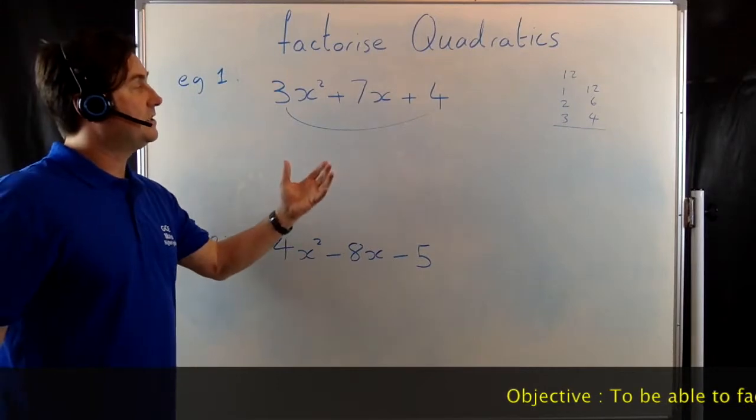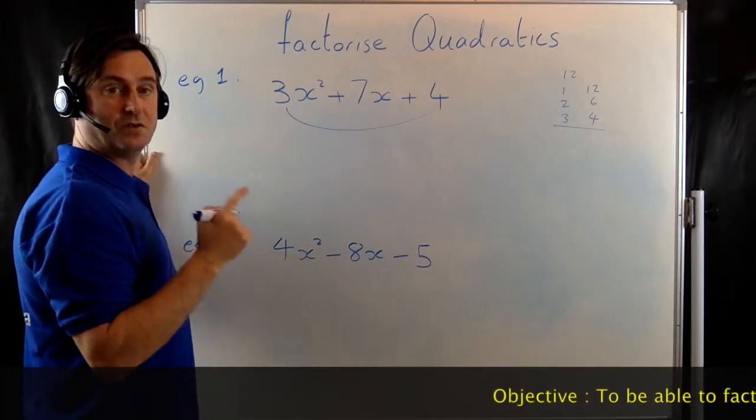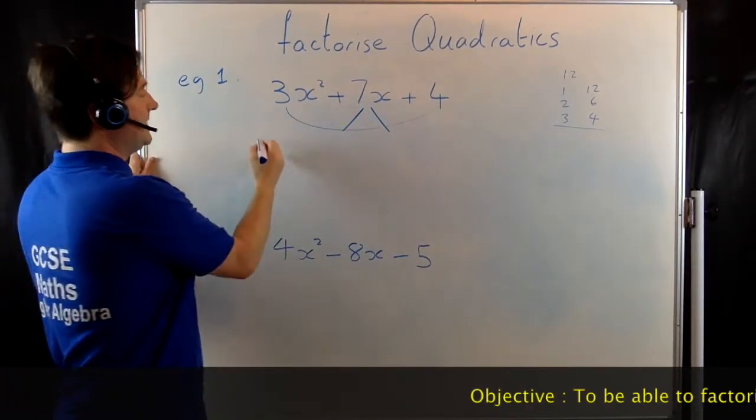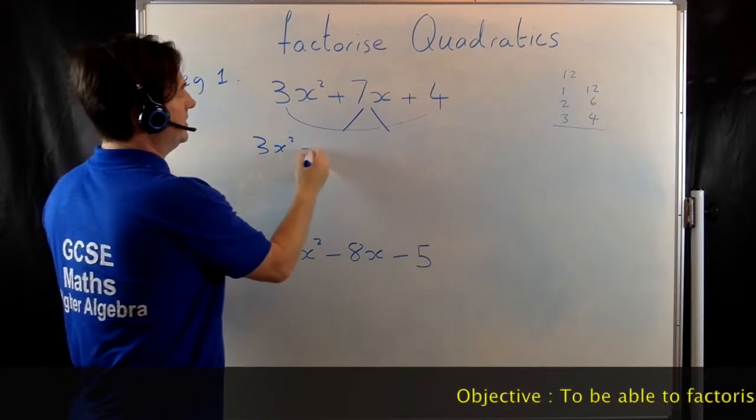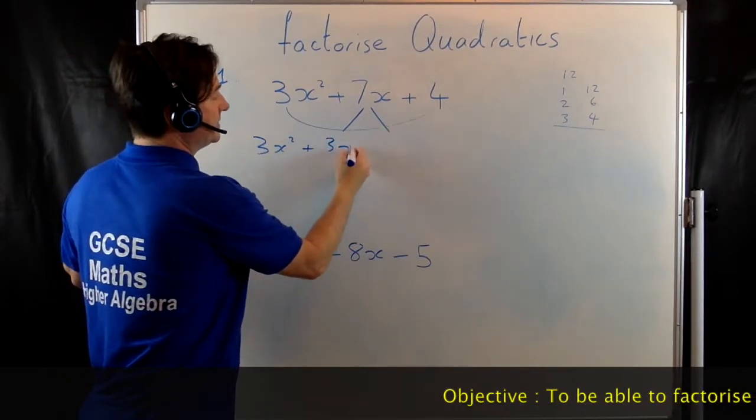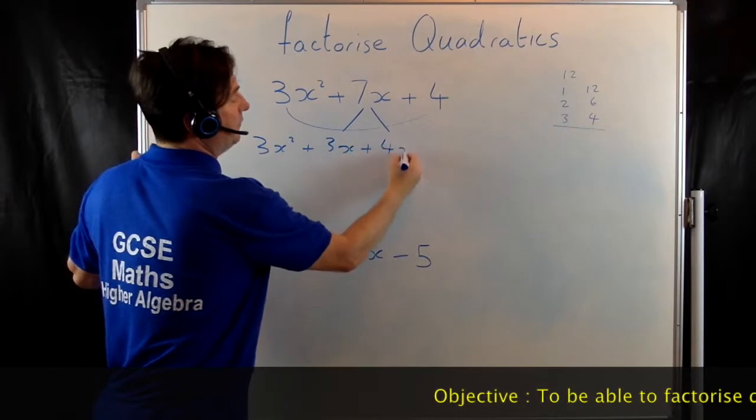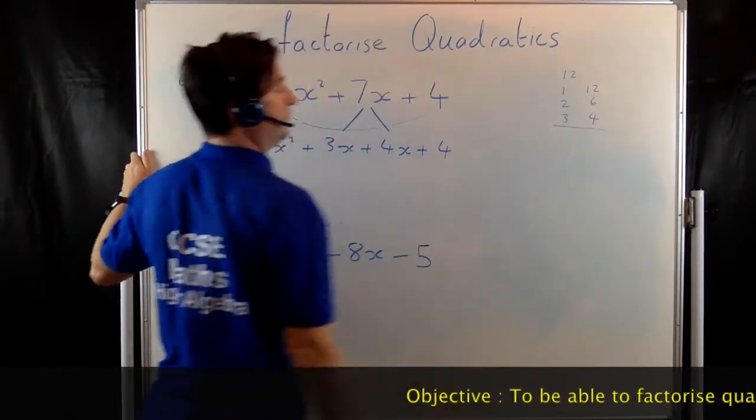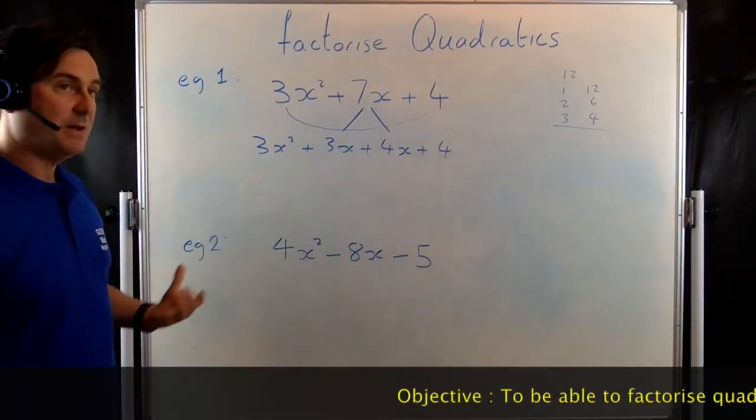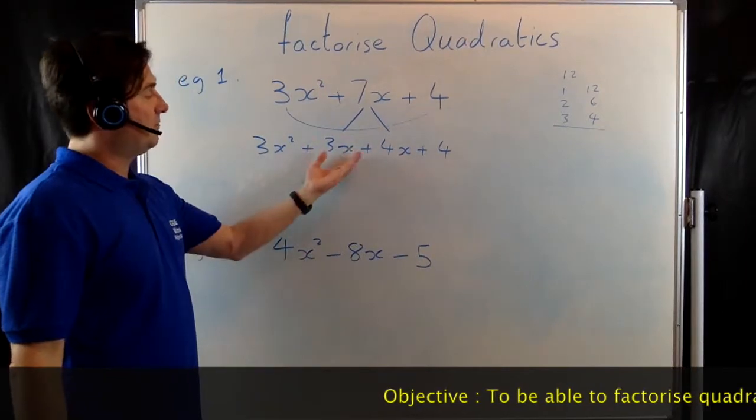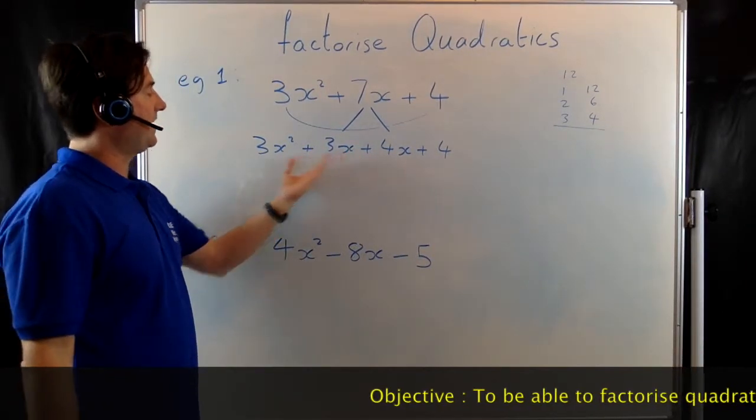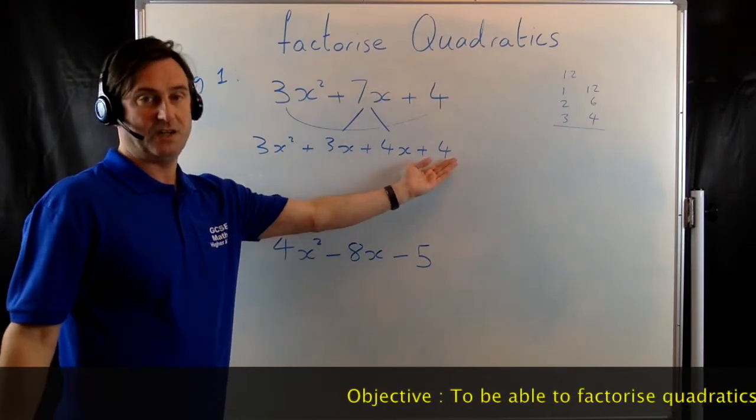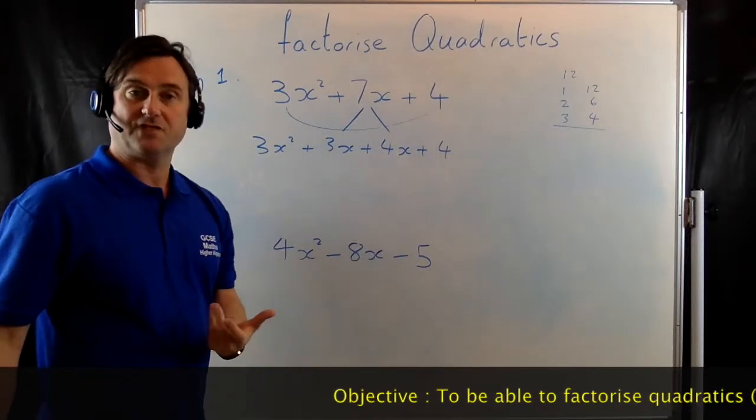But what we now need to do is we need to split this 7 into those two numbers. So if we open the 7x up, write it out again, 3x squared plus 3x plus 4x plus 4. All I've done is I've split the 7x into 3x and 4x. It does matter which way round you put these because I've put the 3 here because the 3 factorises better with the 3 in front of it and the 4 factorises better with the 4 behind it.